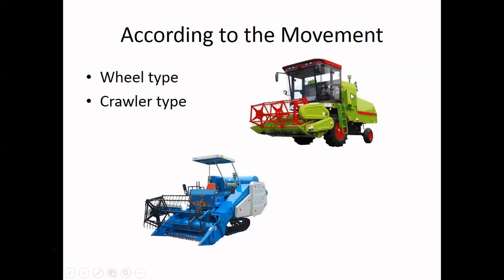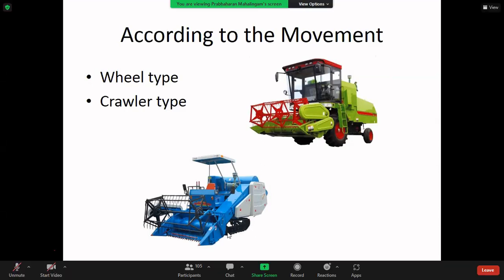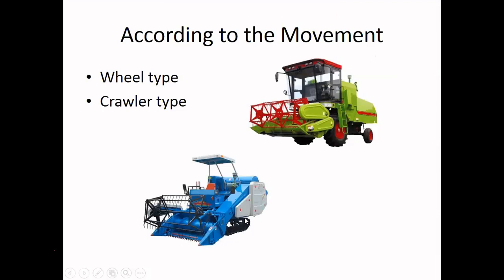There are two types of combine harvesters based on movement: wheel type and crawl type. The wheel type has metal, plastic, or rubber chains inside the wheel. The crawl type can move in water or muddy conditions because it uses track-like movement. The wheel type sometimes struggles in wet conditions, so that is why two types exist.